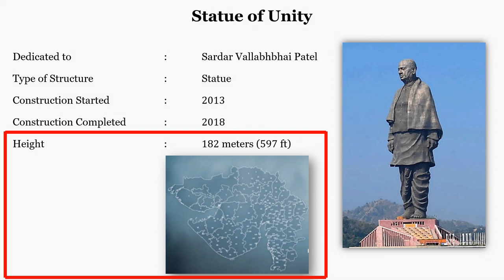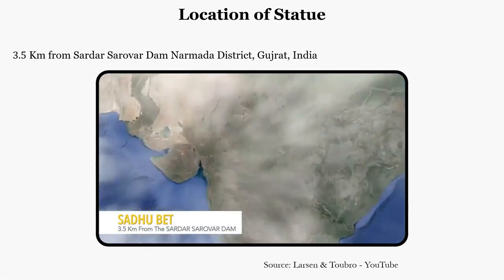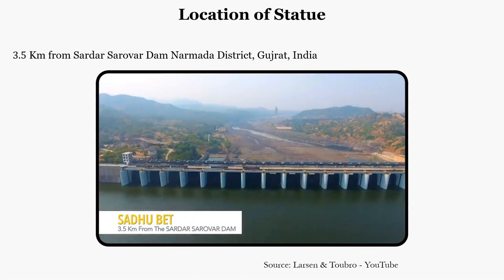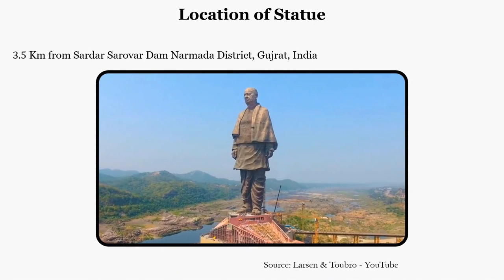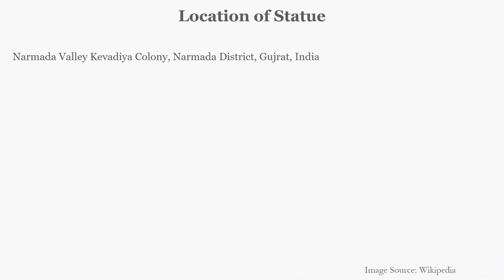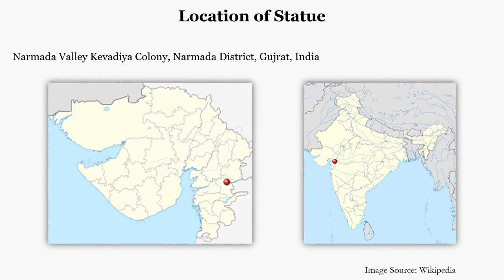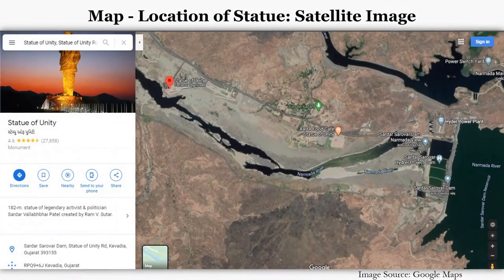The statue is located at 3.5 kilometers from the Sardar Sarovar Dam on the river Narmada, in Kevadia Colony, which is 100 kilometers southeast of the city of Vadodara and 150 kilometers from Surat in the state of Gujarat. The story behind finalizing the location is that after the intention to bring the statue to reality, the big question was what should be the ideal location, and finally Sadhu Beit was chosen for it.